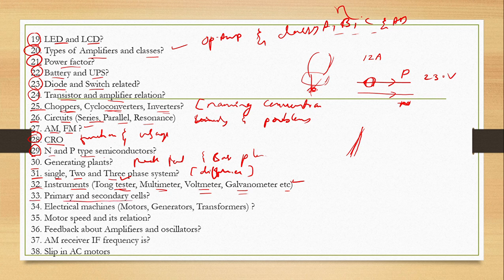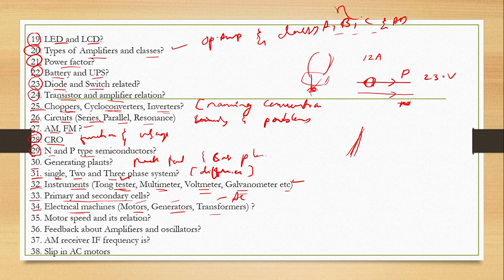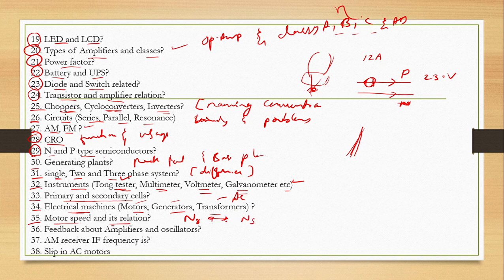Primary and secondary cells are very important. Electrical machines: motor, generator, transformer — motor AC and DC. The transformer works on AC. This is the relative speed and the asynchronous speed — this is the difference.